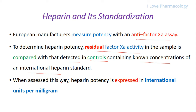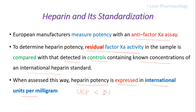When assessing heparin potency with the anti-factor Xa assay, potency is expressed in international units per milligram. Currently, the US Pharmacopoeia unit is less than 10% of the older ones, and these USP units have now been harmonized with the international units. Since the current USP is less than 10% as potent as the earlier preparation, a slightly higher dose is required to achieve the anticoagulant effect.